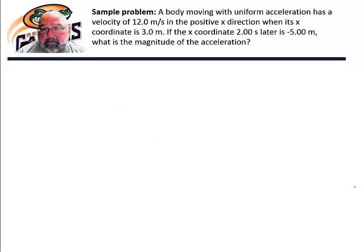We have a body moving with uniform acceleration, and it has a velocity of 12 meters per second in the positive direction when its x-coordinate is 3 meters. If the x-coordinate 2 seconds later is negative 5 meters, what is the magnitude of the acceleration?